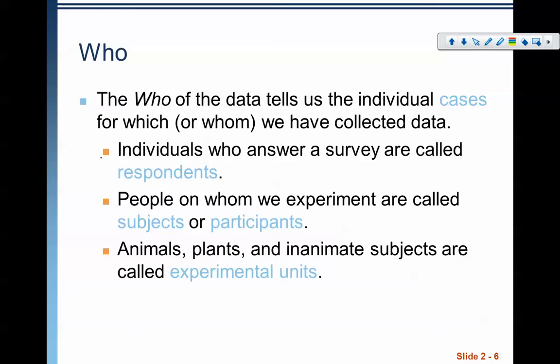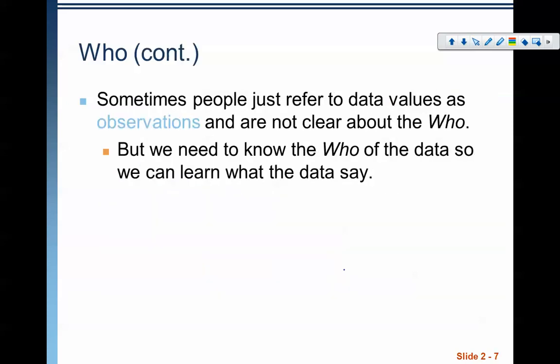We have different states and countries for places, different prices, area codes—these are all different things that were measured, different variables associated with the who. Let's talk a little bit more about the who. The who of the data tells us the individual cases for which or whom we have collected data. If the individuals answer a survey, we call these things respondents. People who we experiment on are usually called subjects or participants. If it's an animal, we call them experimental units. These are all vocabulary words we use to describe the who of a dataset.